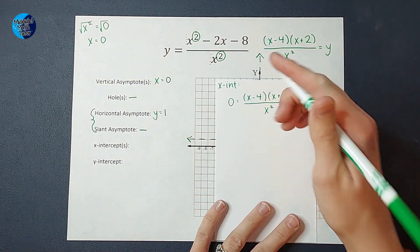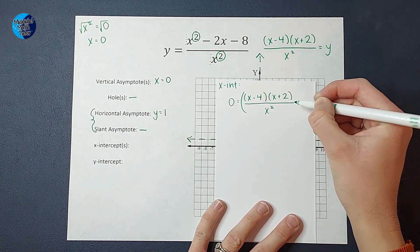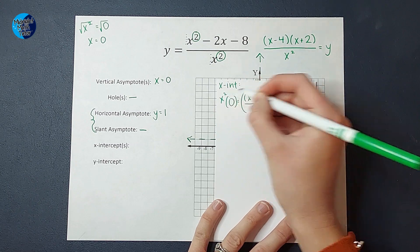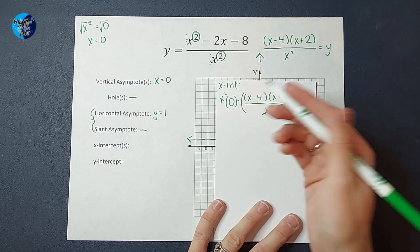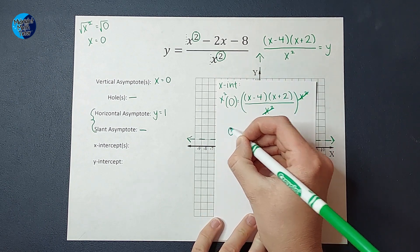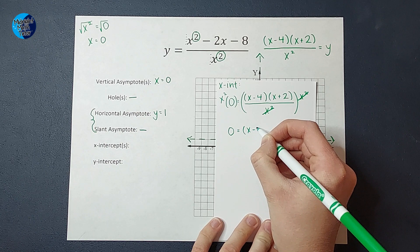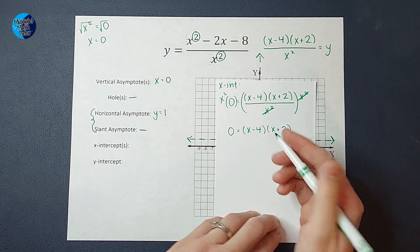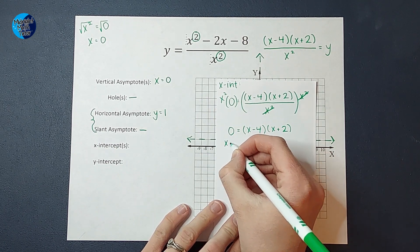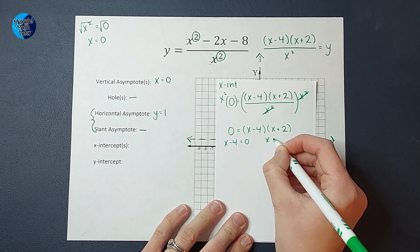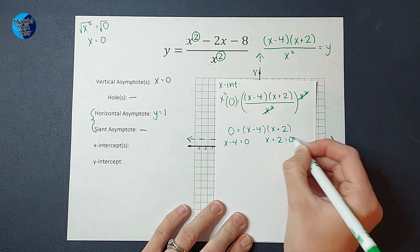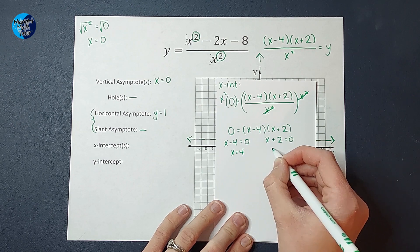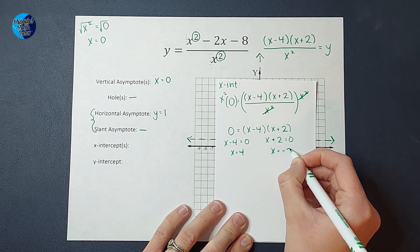Now if I'm solving for x, I want to get rid of that ugly fraction. So I'm going to multiply both sides by x squared, because when I do that, these cancel, and x squared times zero is just zero. So I end up with zero equals x minus four times x plus two. And then I'm going to set each of those equal to zero. So I have x minus four equals zero, and x plus two equals zero. Add four to both sides, I end up with x equals four, and subtract two from each side, I'm going to end up with x equals negative two.